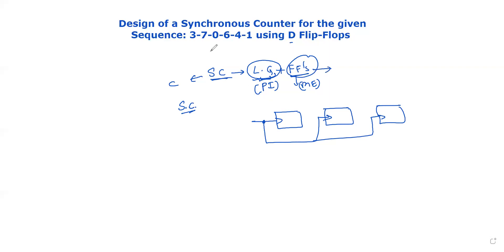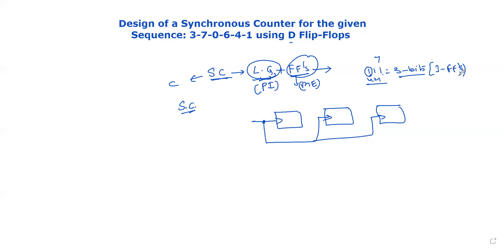We have several flip-flops in this sequence. The largest number is 7. In binary format, 7 is 1-1-1, which means it is 3 bits. 1-1-1 uses binary weights 4, 2, and 1. So 3 bits are required to design the circuit. This means we need 3 memory elements, i.e., 3 flip-flops. Each bit is either 0 or 1. We will design the synchronous counter accordingly.